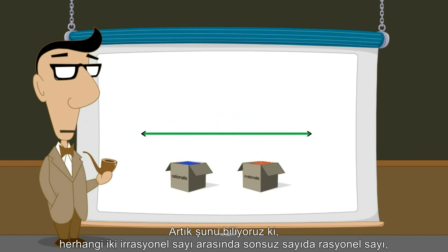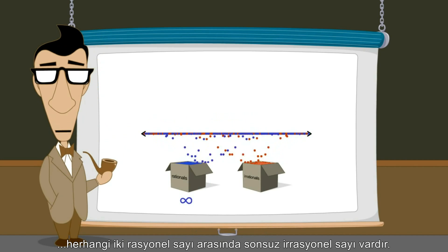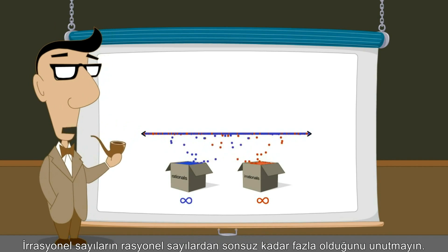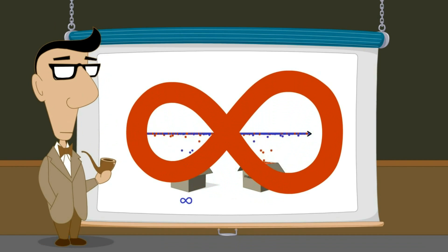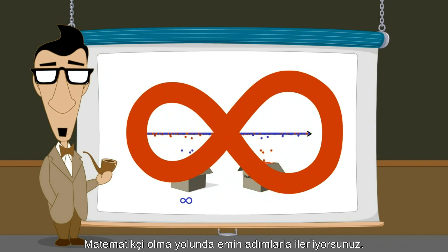So now we know that between any pair of irrational numbers are an infinite number of rational numbers, and between any pair of rational numbers are an infinite number of irrational numbers. And don't forget that there are infinitely more irrational numbers than rational numbers. If this makes your head want to explode, then congratulations — you are on your way to becoming a mathematician.